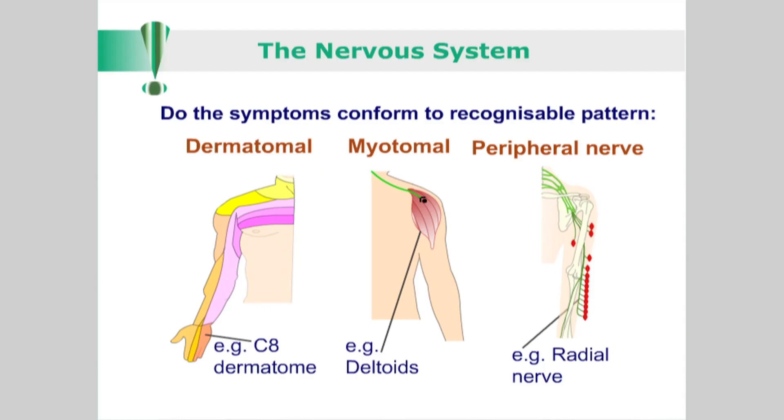It is for you, as the clinician, to then discern whether these symptoms conform to recognisable patterns — that is, dermatomal and myotomal in distribution, relating to specific nerve roots, or of a wider territory, like that of peripheral nerve distribution.